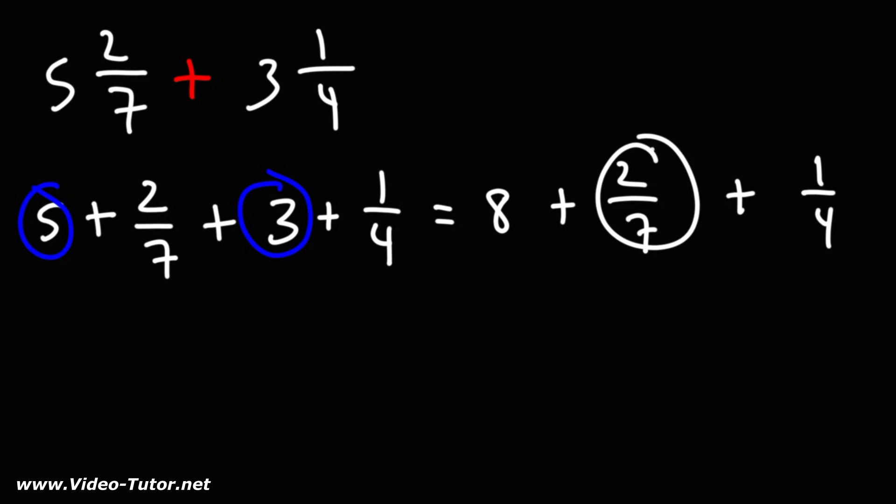Next, we need to add these two fractions, and we can do that by getting common denominators. I'm going to multiply the first fraction using the denominator of the second, and the second fraction using the denominator of the first.